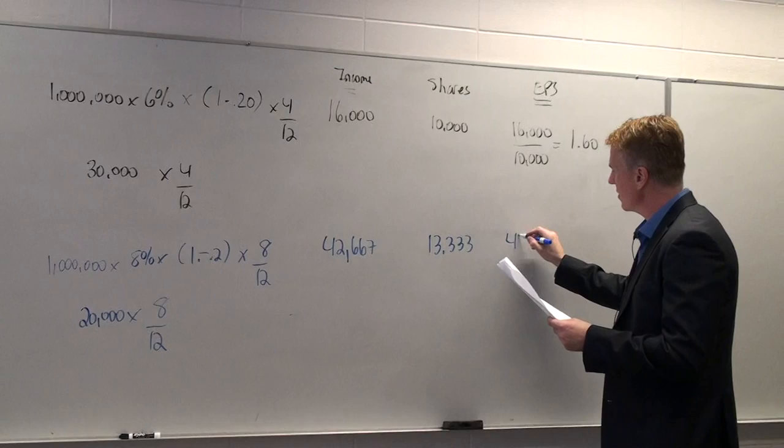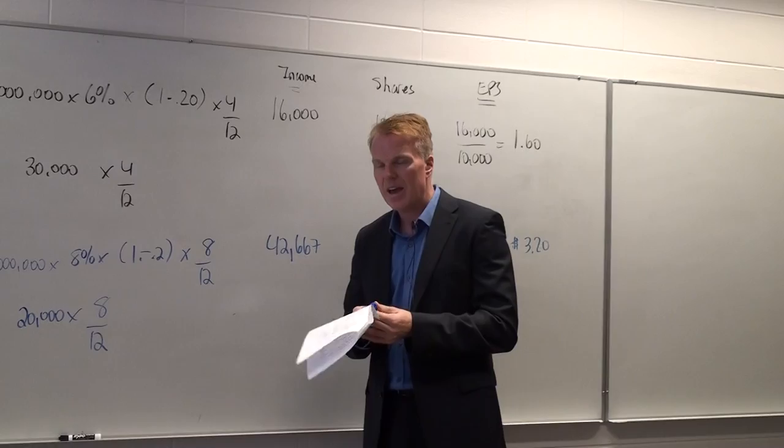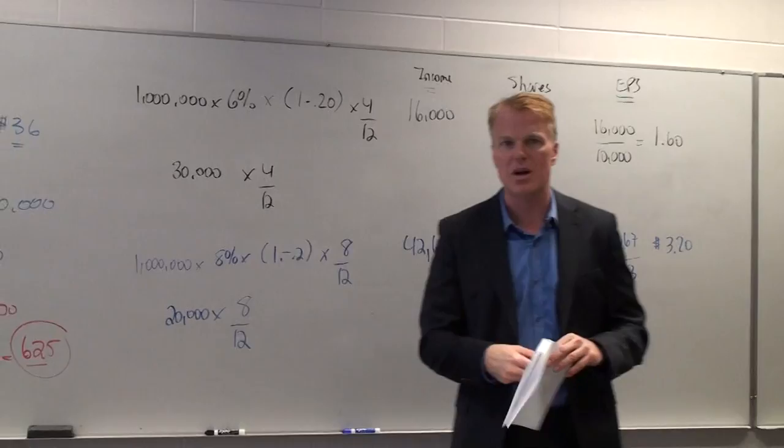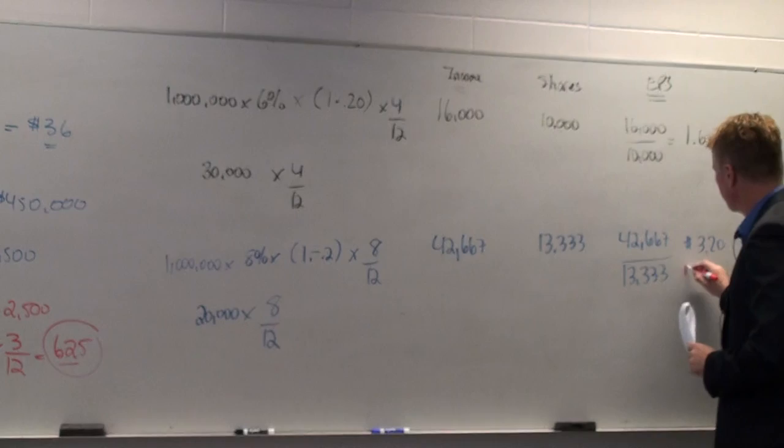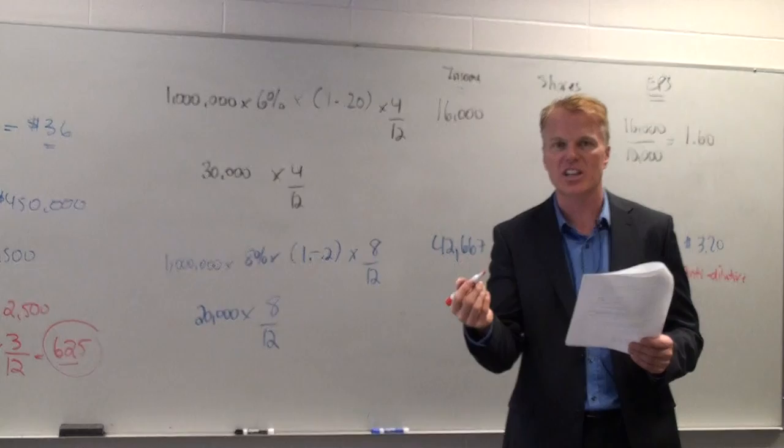Now this one's interesting. $42,667 divided by 13,333. That one's equal to $3.20. And as you start to get into this topic a little bit more advanced and you start to get really comfortable with what this topic is doing, you're going to realize that right off the bat, this is anti-dilutive.